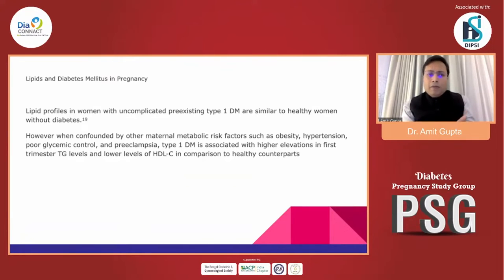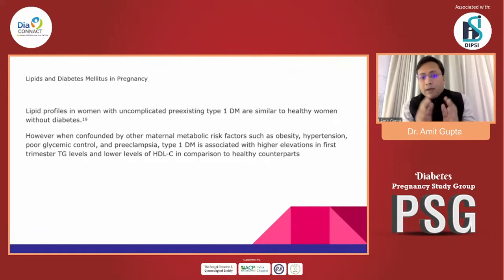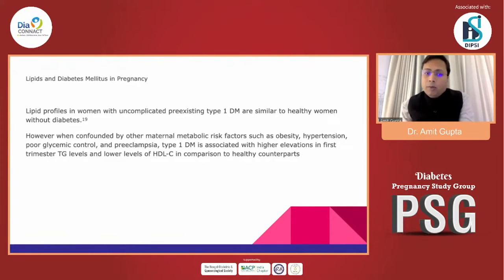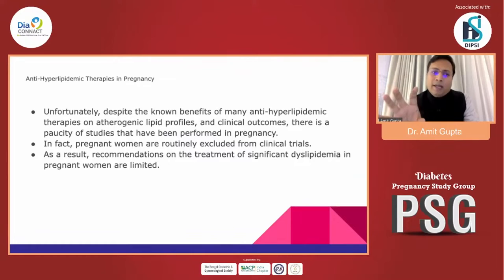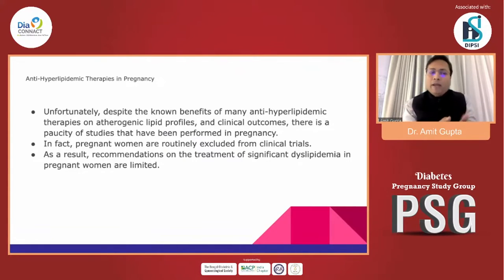Lipid profiles in women with uncomplicated pre-existing type 1 diabetes are similar to healthy women without diabetes — controlled diabetes does not lead to further rises in lipid levels. However, when confounded by other metabolic factors such as obesity, hypertension, poor glycemic control, and preeclampsia, it can lead to greater-than-normal elevations in first-trimester triglyceride levels and lower HDL cholesterol. One gray area is that most of the time we cannot conduct studies in pregnancy due to ethical concerns — pregnancy is always an exclusion criterion in drug trials — so practically we have nothing to treat dyslipidemia during pregnancy.